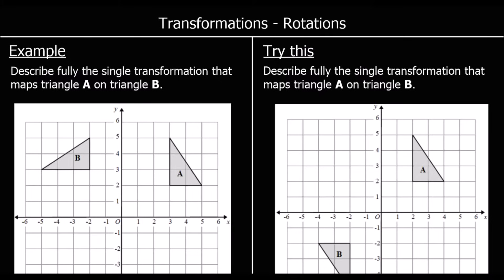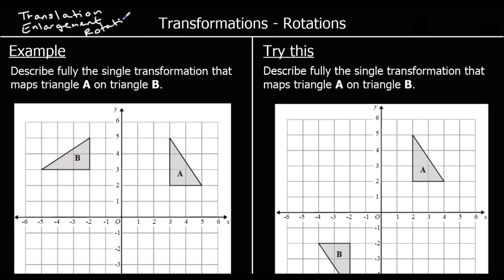In the first example, we're being asked to describe the single transformation that maps triangle A onto triangle B. When we're asked for a transformation, it can either be a translation, which just means we move the same shape. It can be an enlargement, where the shape gets bigger or smaller. It can be a rotation or a reflection. So it's going to be one of these four things.